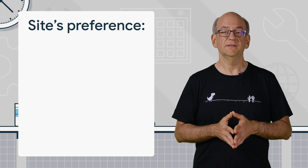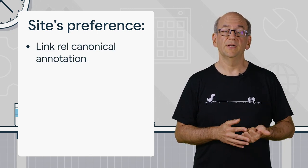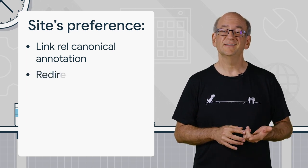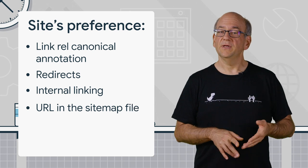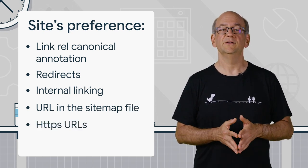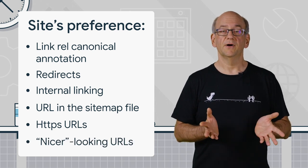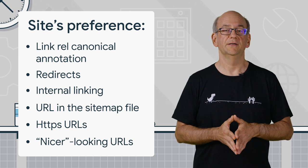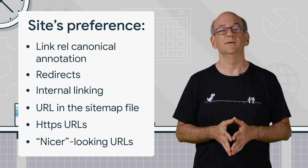When it comes to the site's preference, we look at a number of things. That includes the link rel canonical annotation, which sites can use, but also redirects, internal linking, and which URL is in the sitemap file. We also prefer HTTPS URLs over HTTP URLs, and try to pick nicer looking URLs when we can. We consider the factors involved for each potential canonical URL and then pick the one where more things come together.